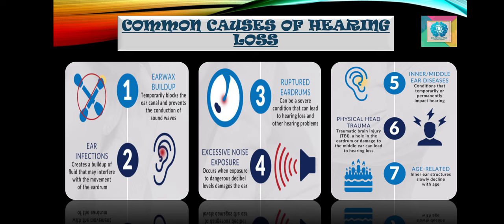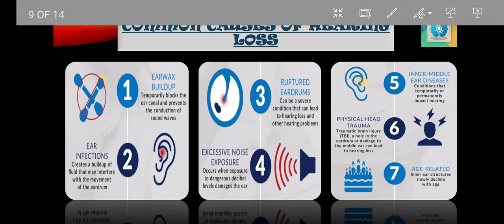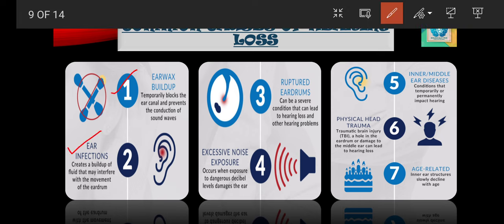Common causes of hearing loss: the first is ear wax buildup — excessive buildup of ear wax can block the ear canal and temporarily impede the transmission of sound waves. A doctor or audiologist can safely remove the buildup to restore hearing. The second is ear infection — infection in the middle or inner ear may also cause temporary hearing loss, as infections create a buildup of fluid that interferes with movements of the eardrum. The third is a ruptured eardrum, also known as tympanic membrane perforation, which may occur due to noise exposure, sudden pressure changes or infection.